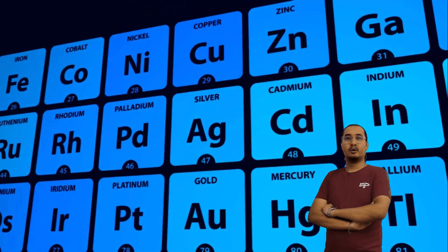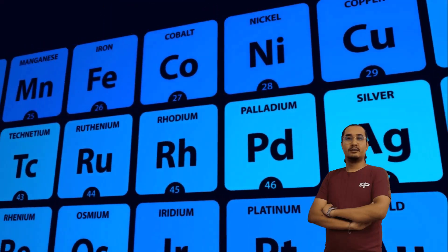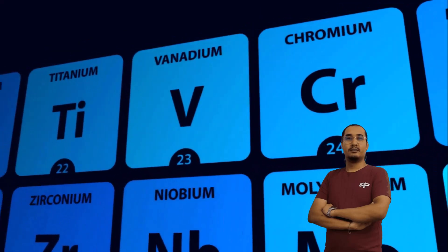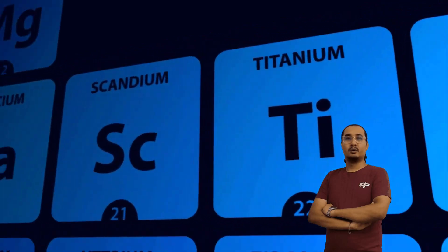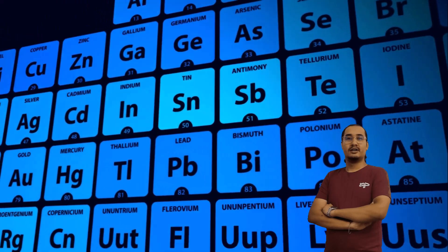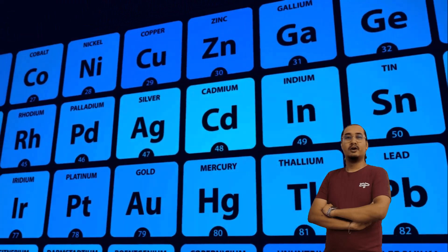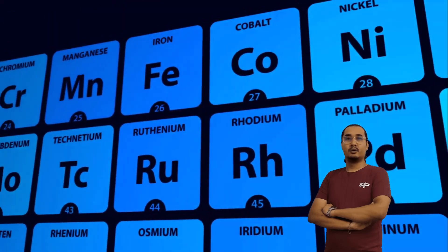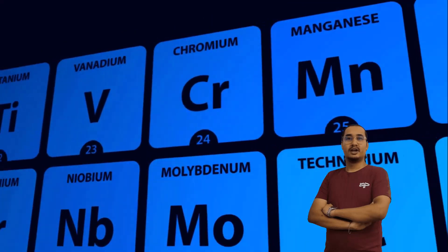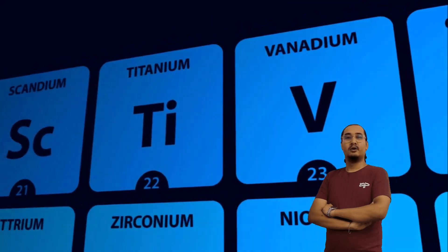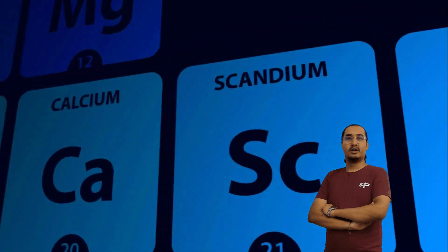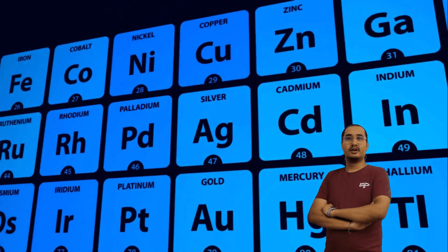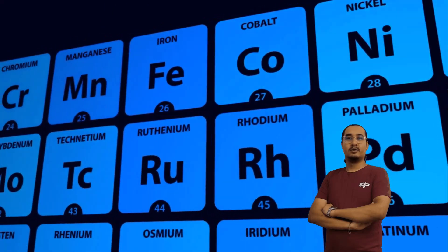The periodic table is a way of organizing elements based on their atomic number, chemical properties, and physical properties. The modern periodic table was developed by Dmitri Mendeleev in the 19th century and has been modified and expanded over time. One of the most important features is that it shows the variation of properties across different periods and groups. In this lesson, we will see how element properties change with periods and groups, and discuss why.